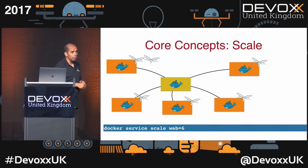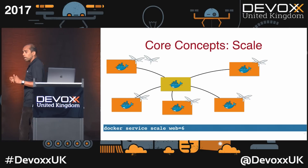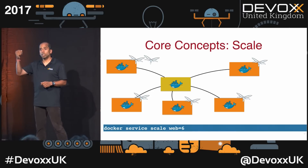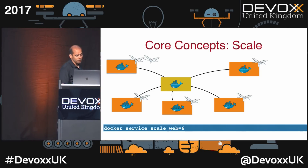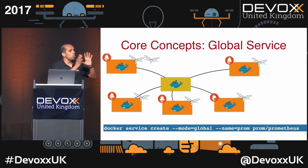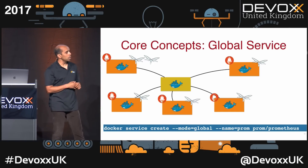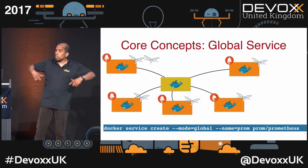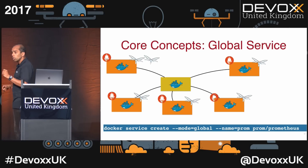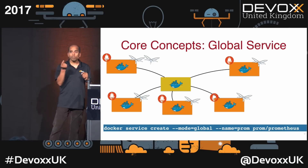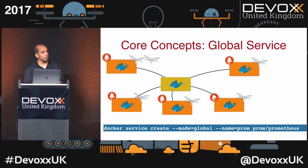Scaling the service is easy: 'docker service scale web=6' automatically scales to six replicas. There is also a global service concept — to run a single instance on each node of the cluster. For example, Prometheus for logging/metrics reporting: 'docker service create --mode global [image]'. If a new node is added to the cluster, it automatically gets that service running. Think about replicated service vs. global service — typically you'll want to start a replicated service.